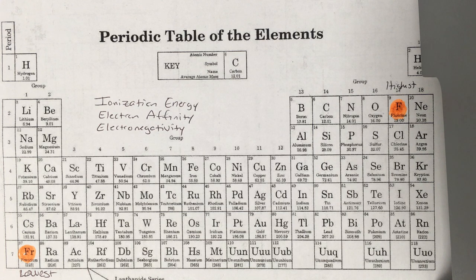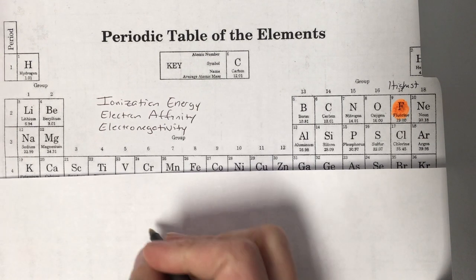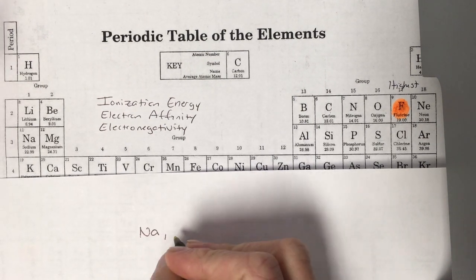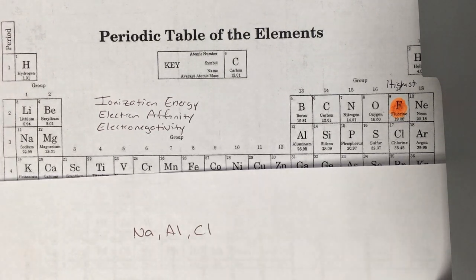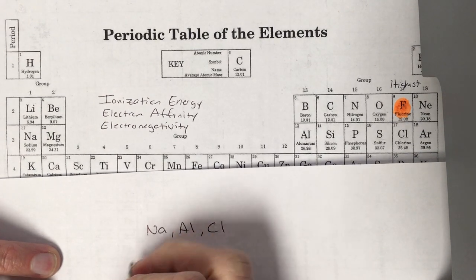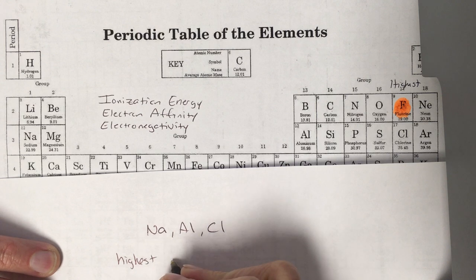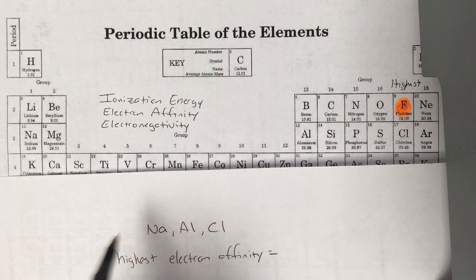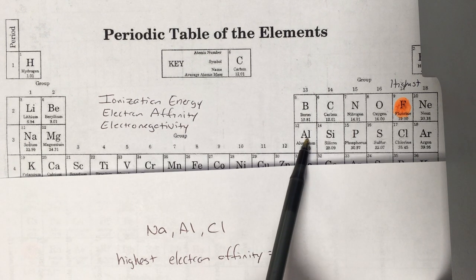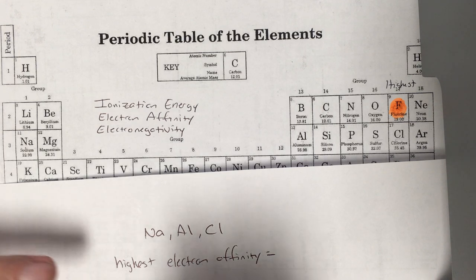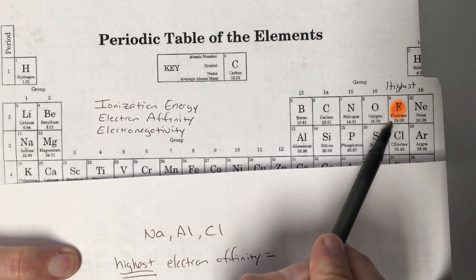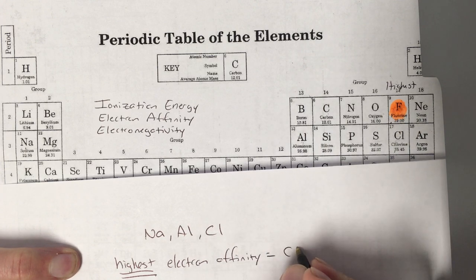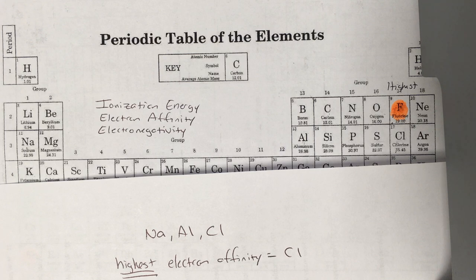Given a set of elements, you need to tell me which one is highest and which is lowest in those three key areas. Let's say we're looking at sodium, aluminum, and chlorine, and I want to know the highest electron affinity. I look at those three elements and see which one is closest to fluorine — the highest element. Chlorine is right next door, so it has the highest electron affinity.